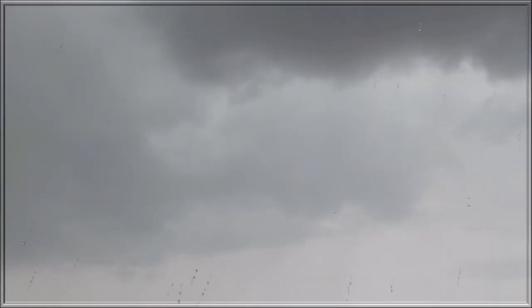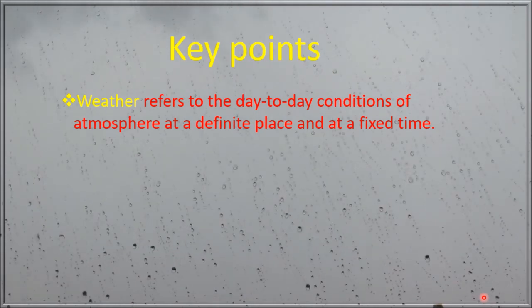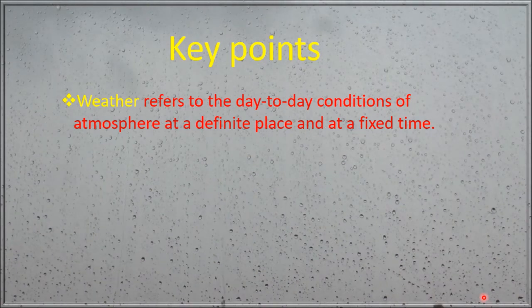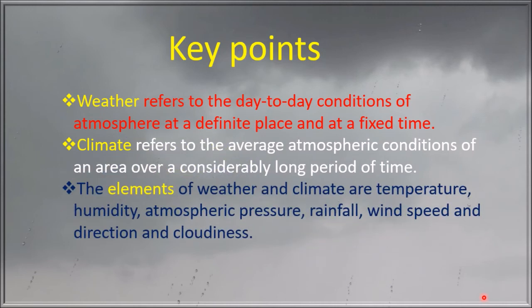Now let us go through some key points. Weather refers to the day-to-day conditions of the atmosphere at a definite place and at a fixed time. Climate refers to the average atmospheric conditions of an area over a considerably long period of time. The elements of weather and climate are temperature, humidity, atmospheric pressure, rainfall, wind speed and direction, and cloudiness.